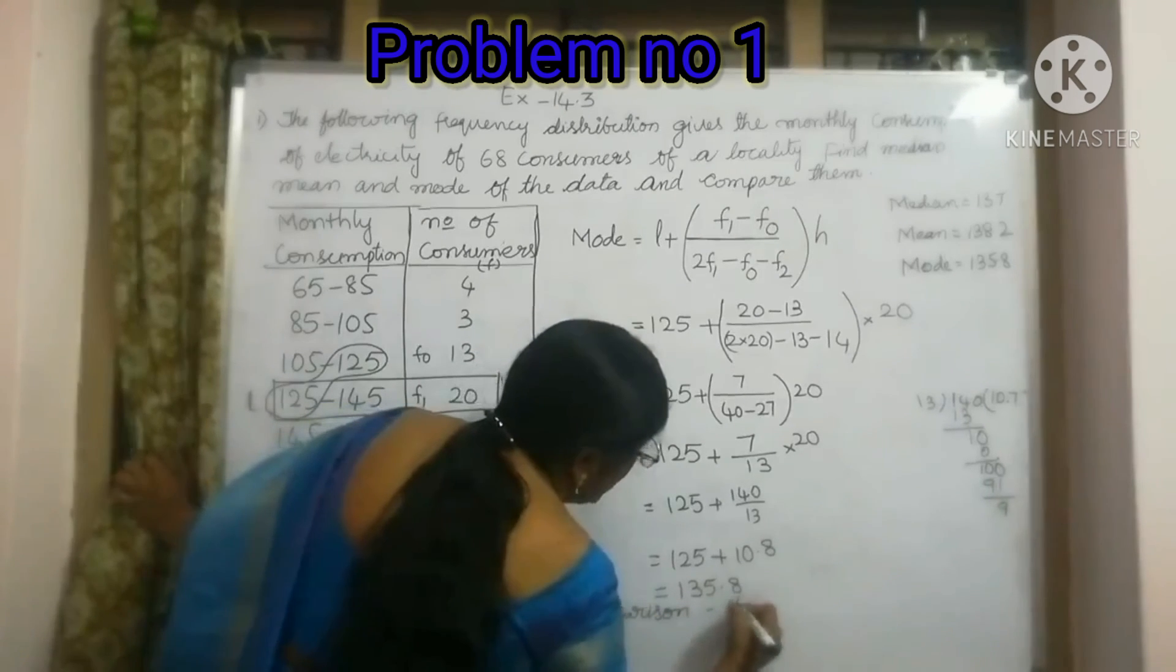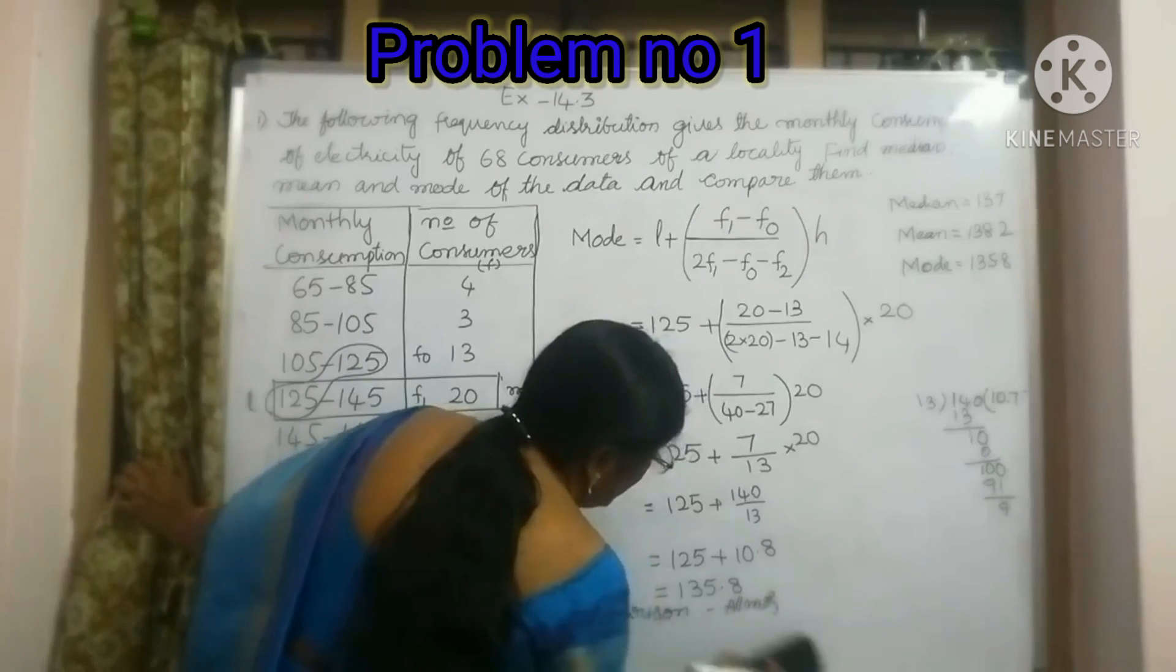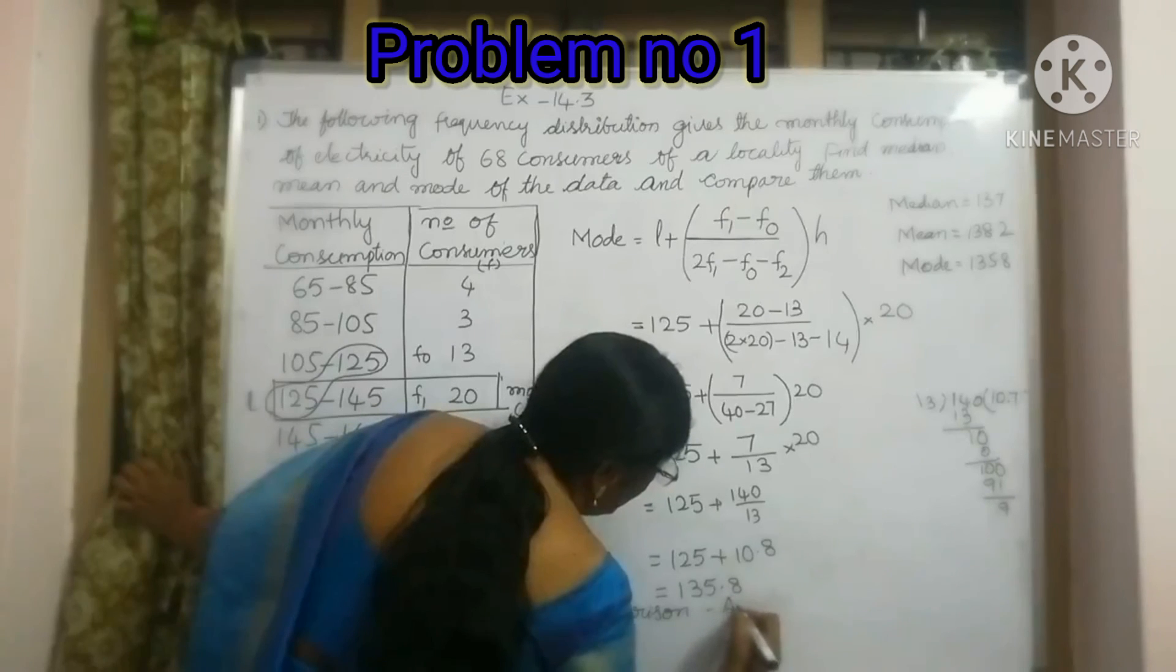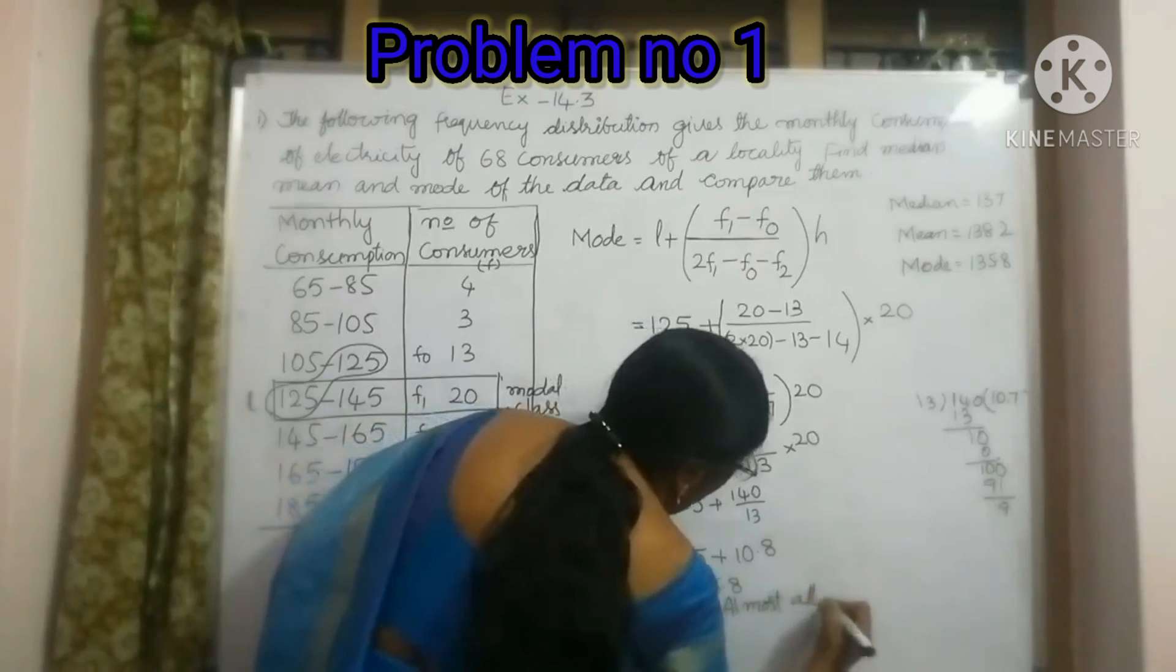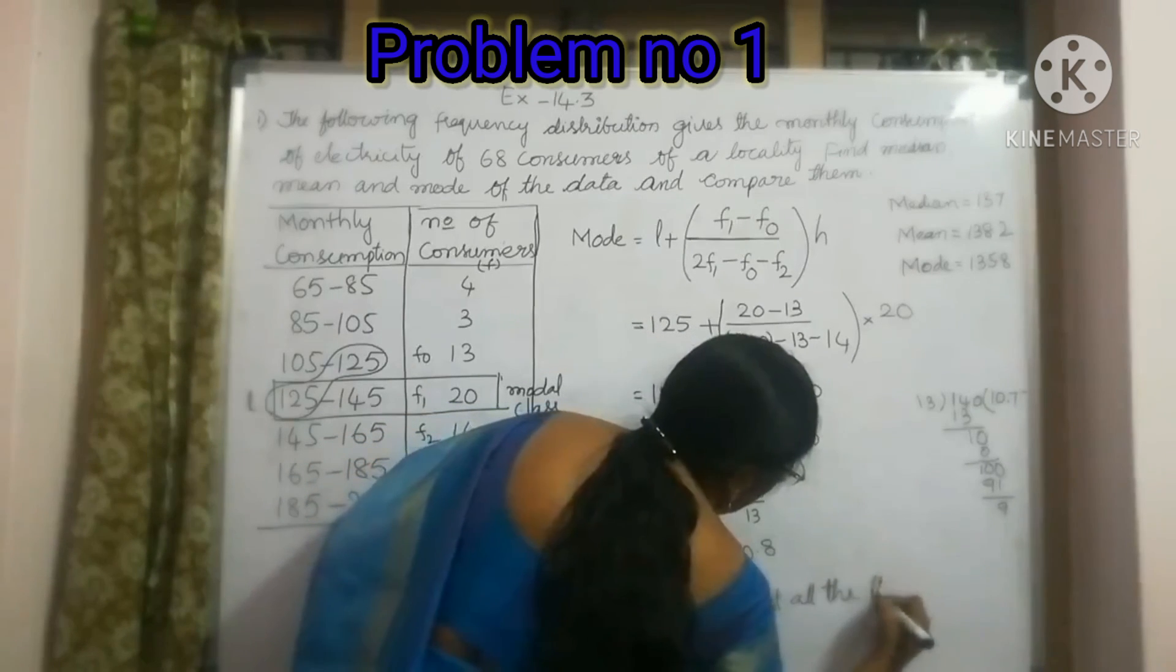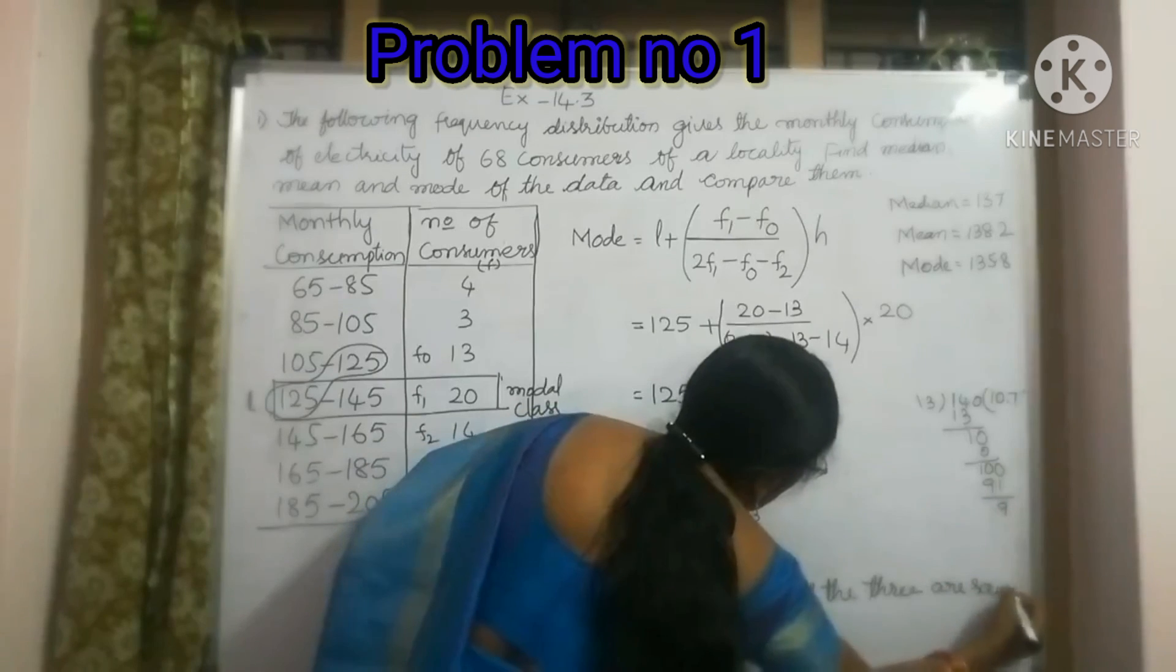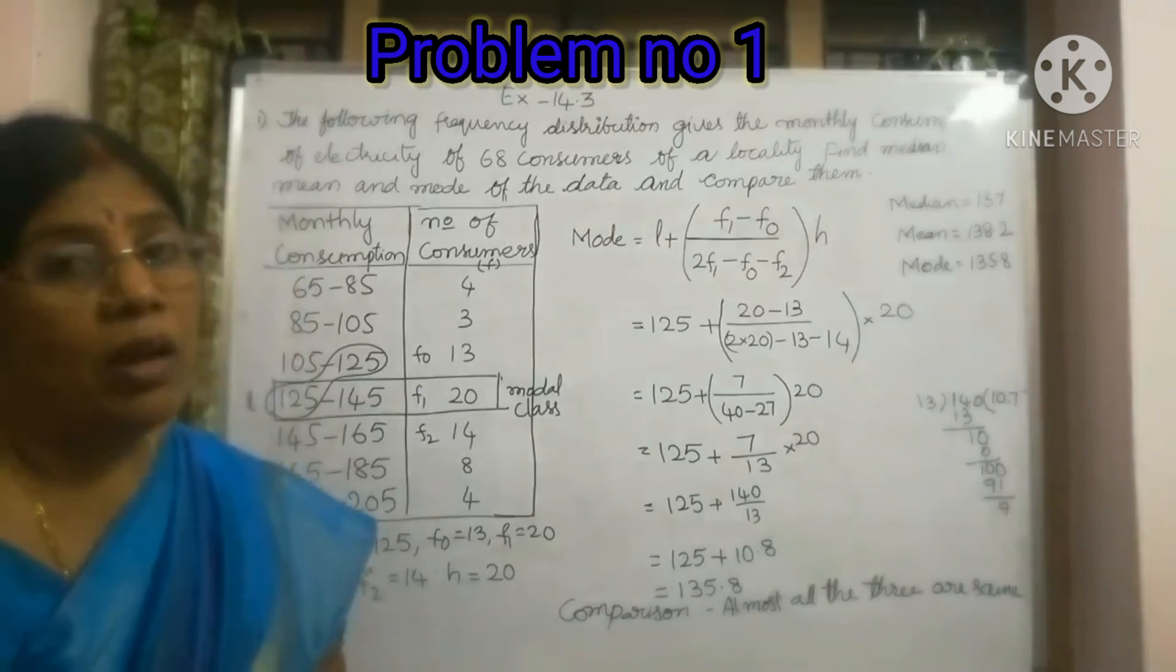Almost all three are the same. There is a slight difference in decimal points, so we can say that all three are the same.